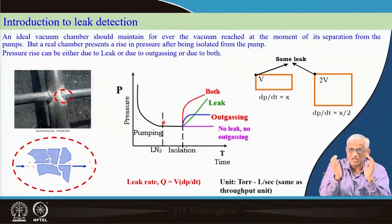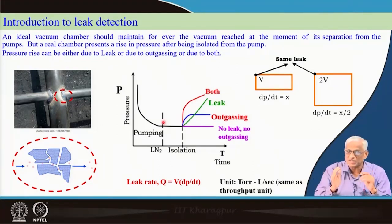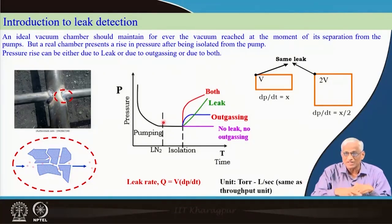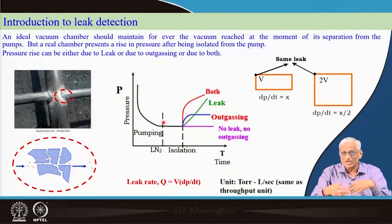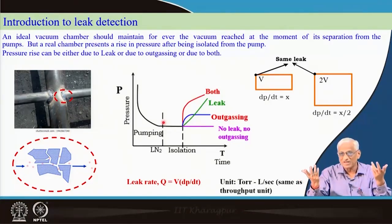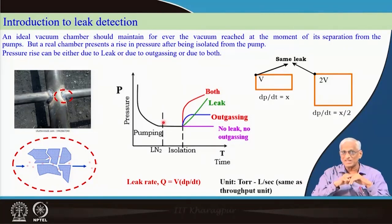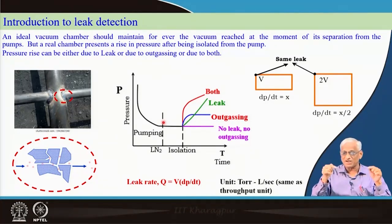The X-ray tube, for example — a sealed-off tube — you have evacuated and sealed it and it should maintain its vacuum. Vacuum interrupters in high-voltage lines should maintain vacuum. TV tubes, bulbs, tubes — all should maintain vacuum. If they do not maintain vacuum after being isolated — because of either degassing or leak — within two months, if a TV tube pressure rises to 10⁻¹ Torr, then cathode rays will be deflected by molecules rather than electromagnetic signals and you will not get a proper image. A triode valve will not work properly. Lots of problems arise — a vacuum interrupter starts sparking because pressure has risen from 10⁻⁷ to 10⁻³ Torr.